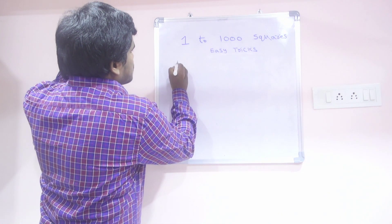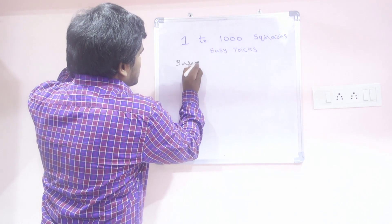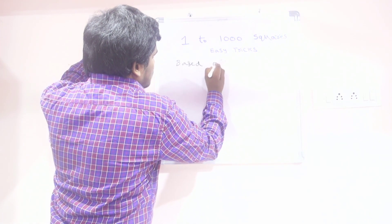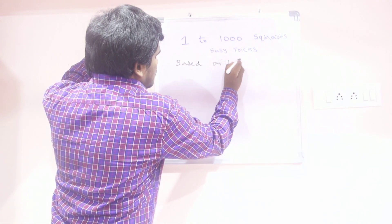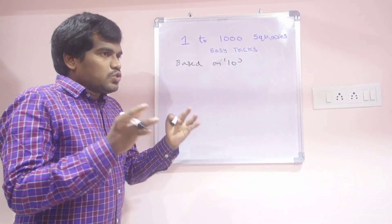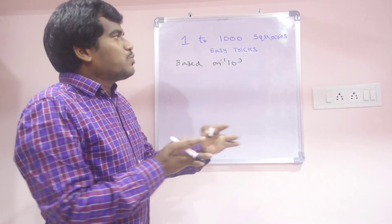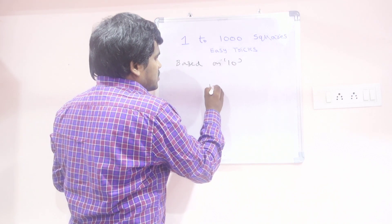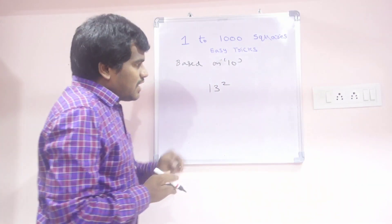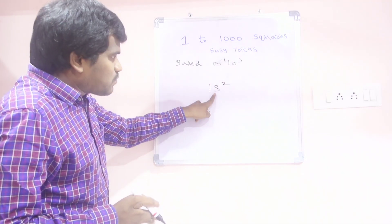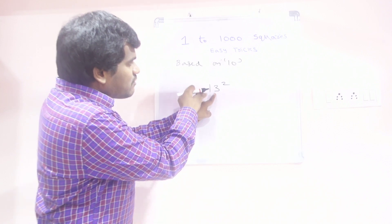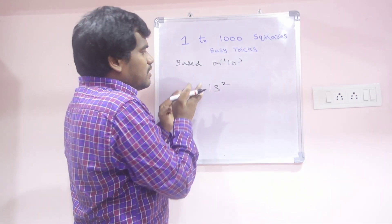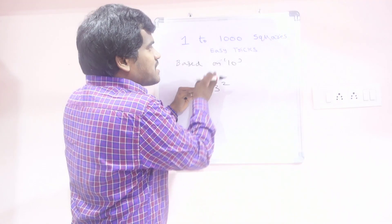First we will discuss based on 10. Based on 10 means, which number is near to 10, first we need to find out. Suppose, I will tell 13 square. If you want to find the 13 square — this 13 value is near to 10. So this 13 is based on 10.